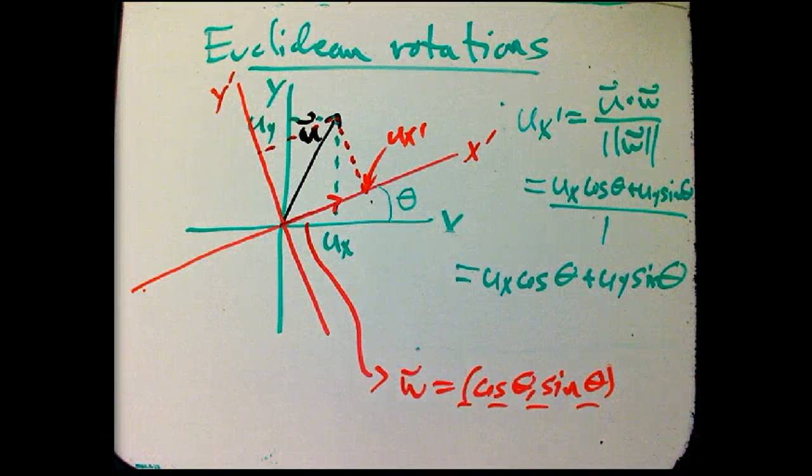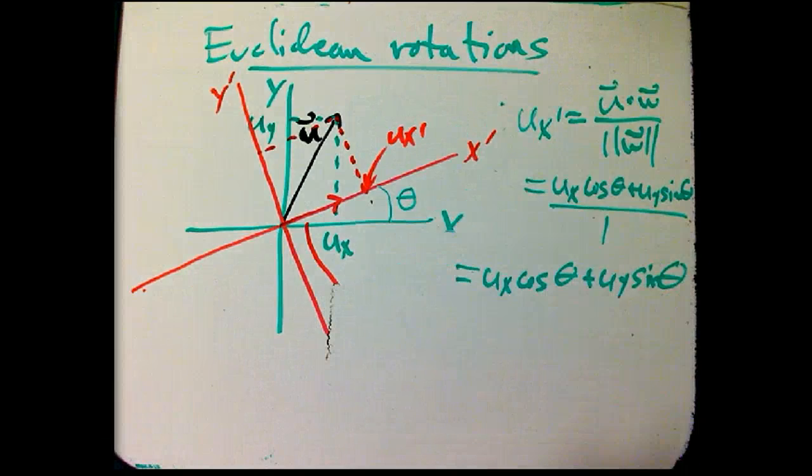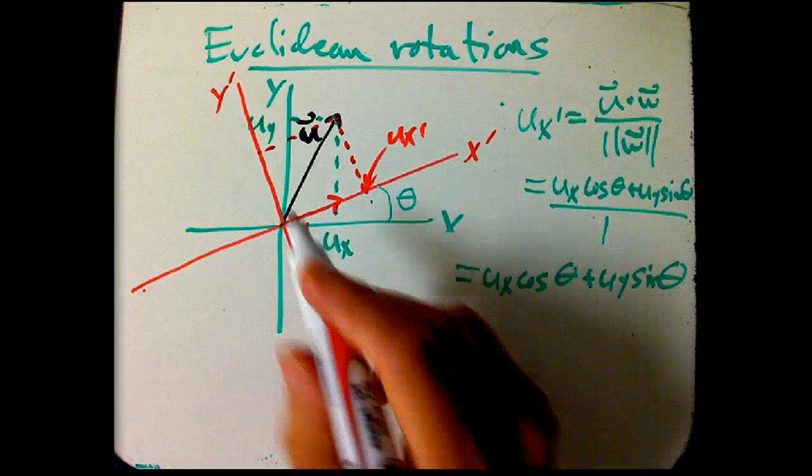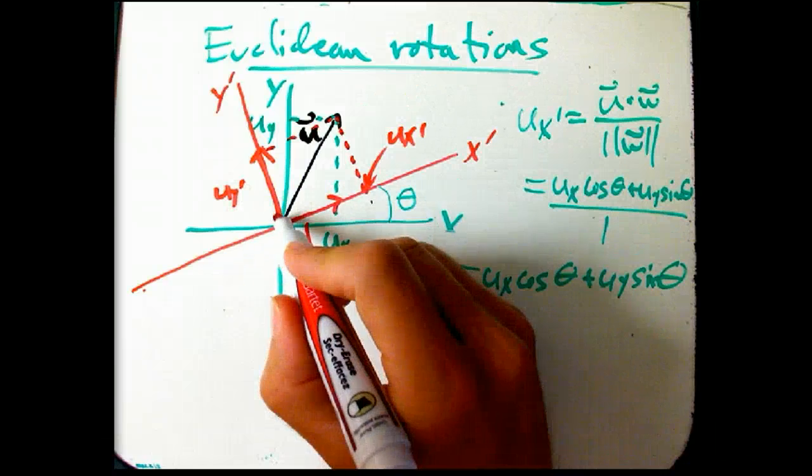Very nice and easy. Now, UY prime, I think I can erase this, I think you can remember what W is, UY prime is this projection, just the scalar projection, onto, let's see, we need a vector here.